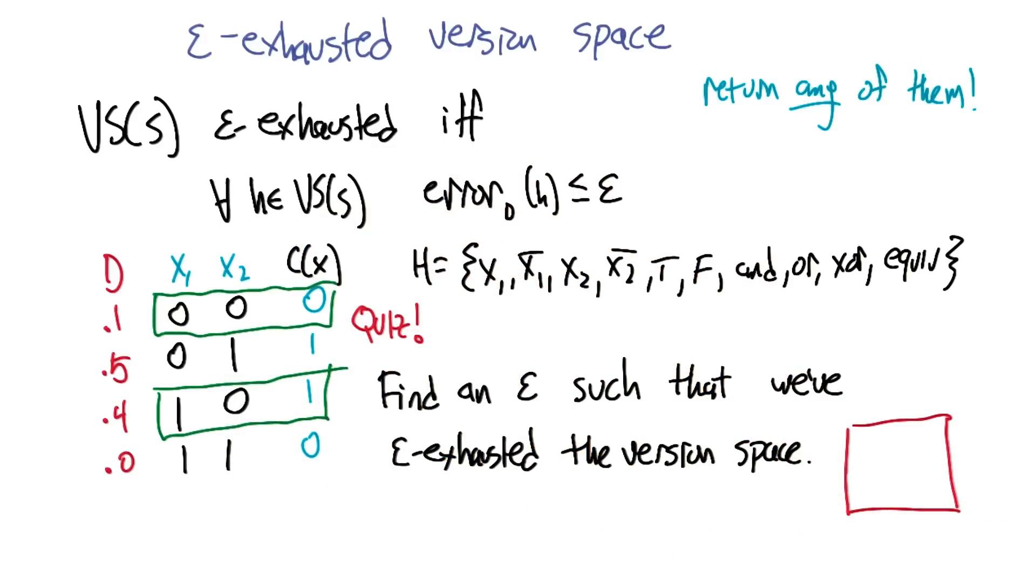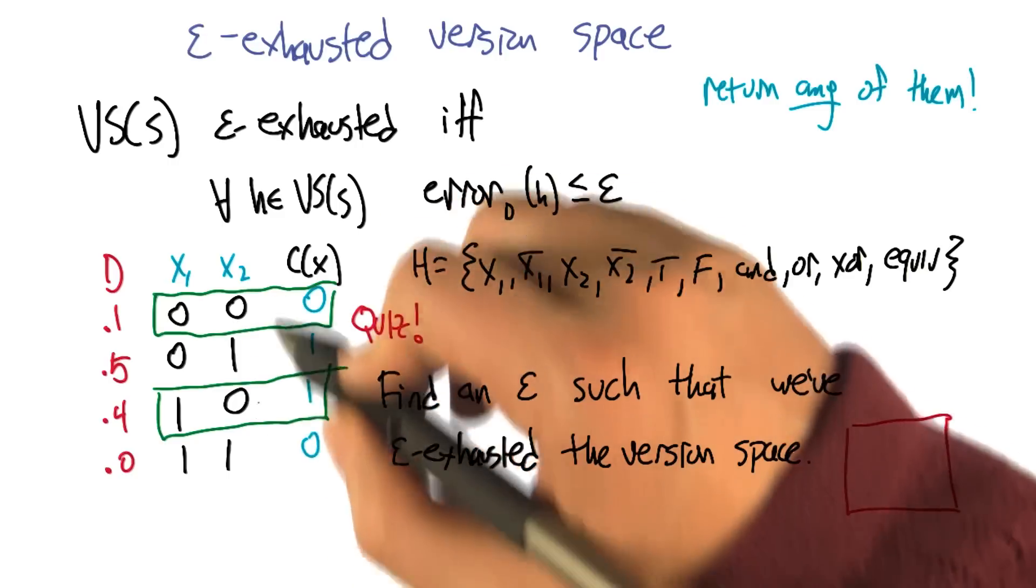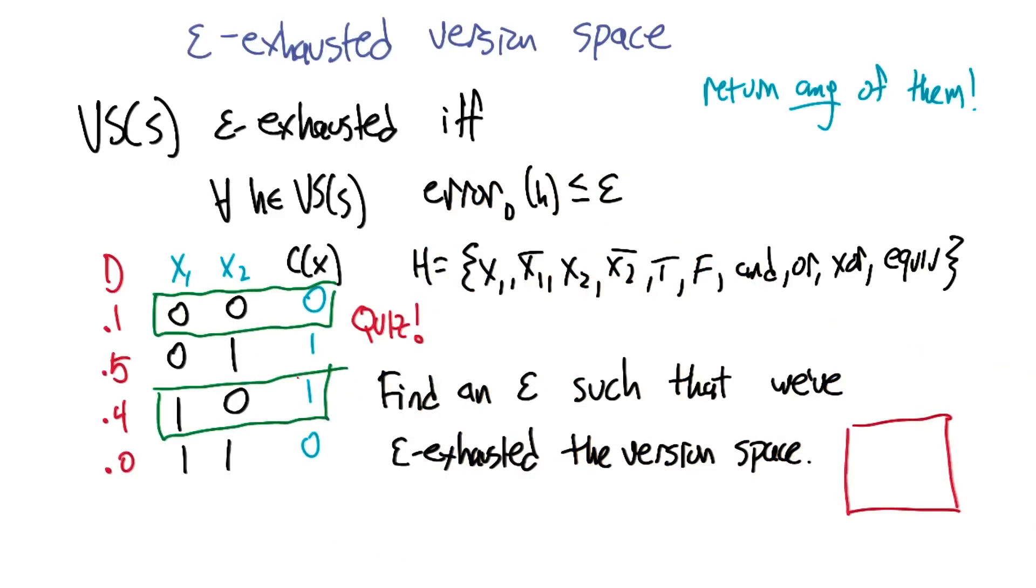All right. So now what we'd like to do is find an epsilon such that this training set that we've gotten has epsilon exhausted the version space.